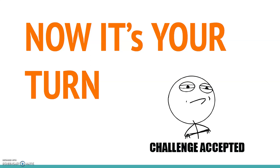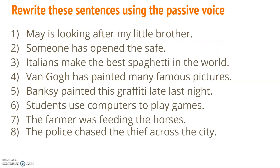I hope that's helped you understand how the passive voice is formed and when to use it. A good way to consolidate your learning is to answer a few questions. Here are eight sentences written in the active voice — I'd like you to change them to the passive voice. They cover different tenses: present simple, present continuous, perfect, and past continuous. Look at the tense of each sentence and make sure you transform it correctly. Press pause and write down your answers now.